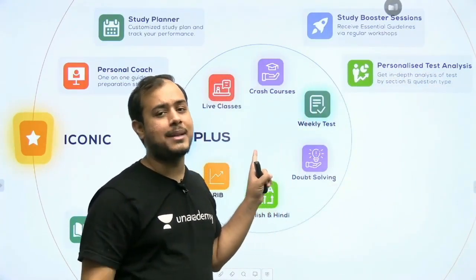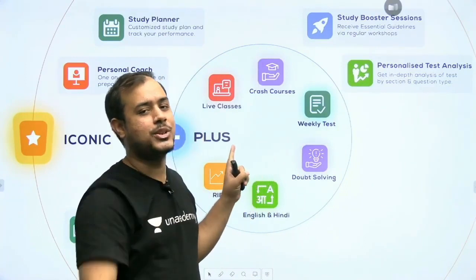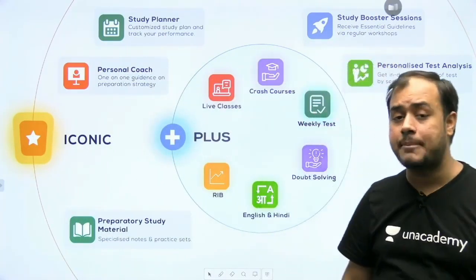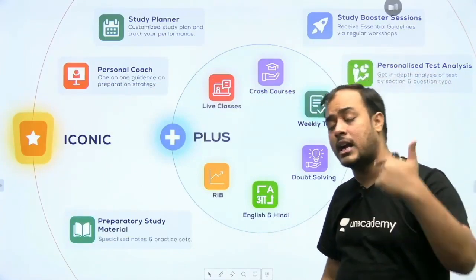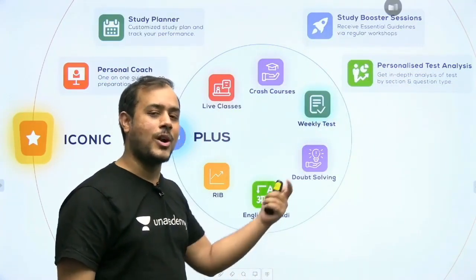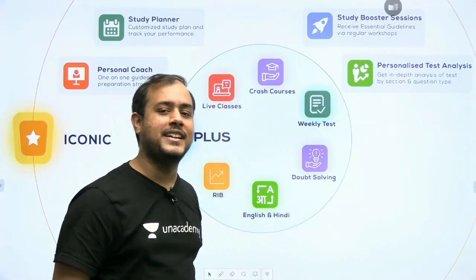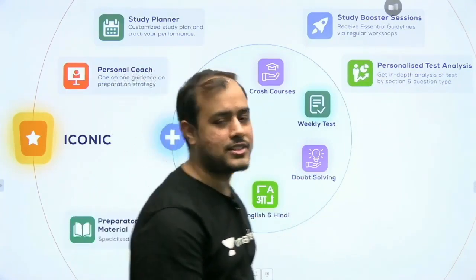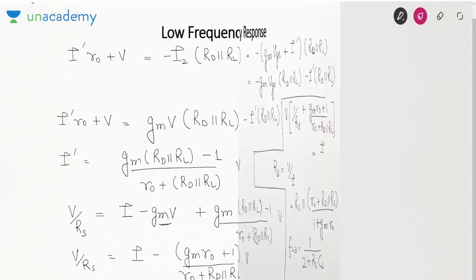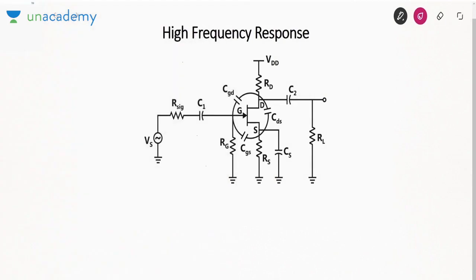So let's move on to the lecture. If you want to join Unacademy, use the code ANKIT ESE to get my guidance as well as 10% off. Now let's see what we have in store — moving on to the high frequency response of JFET.